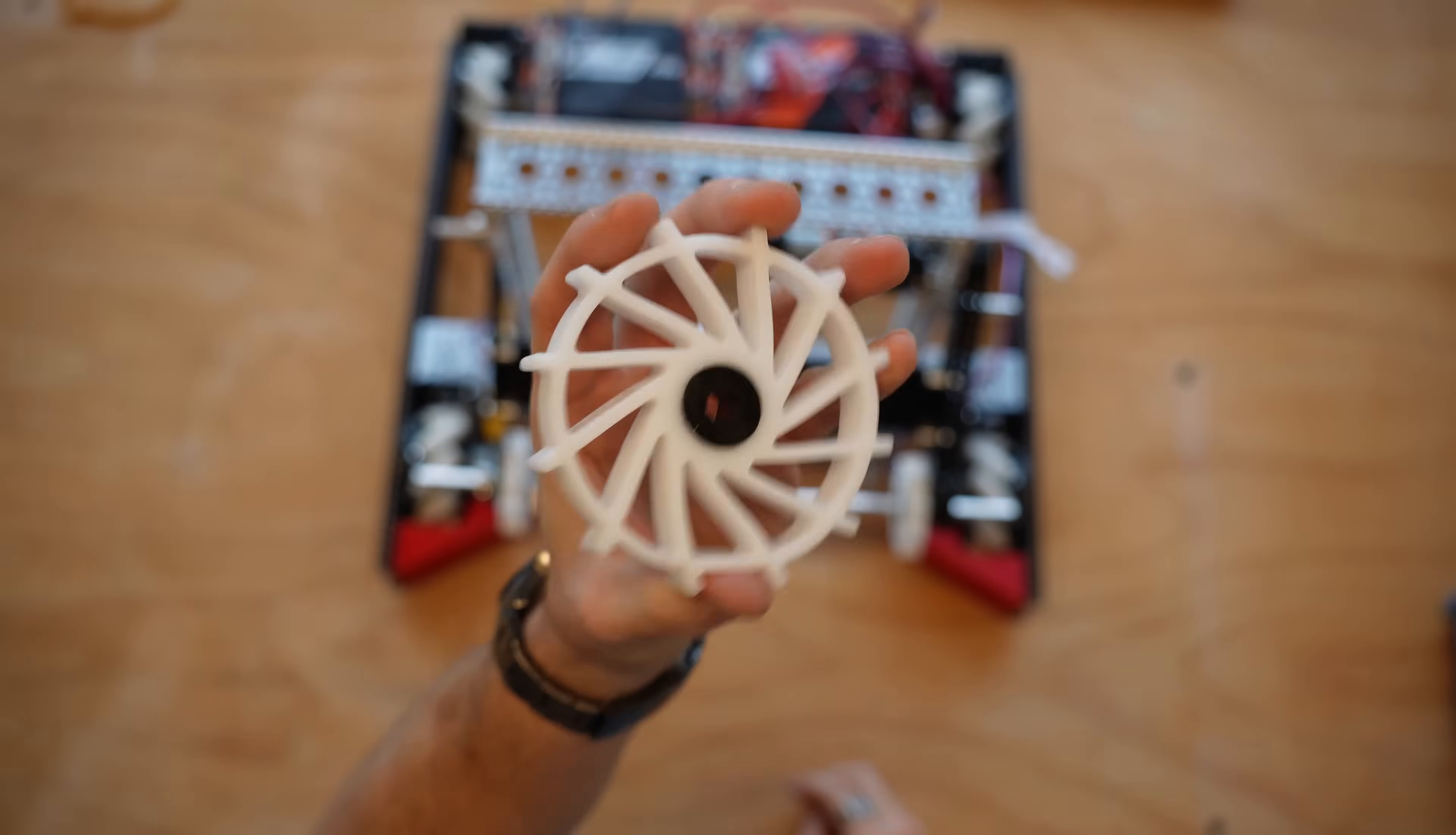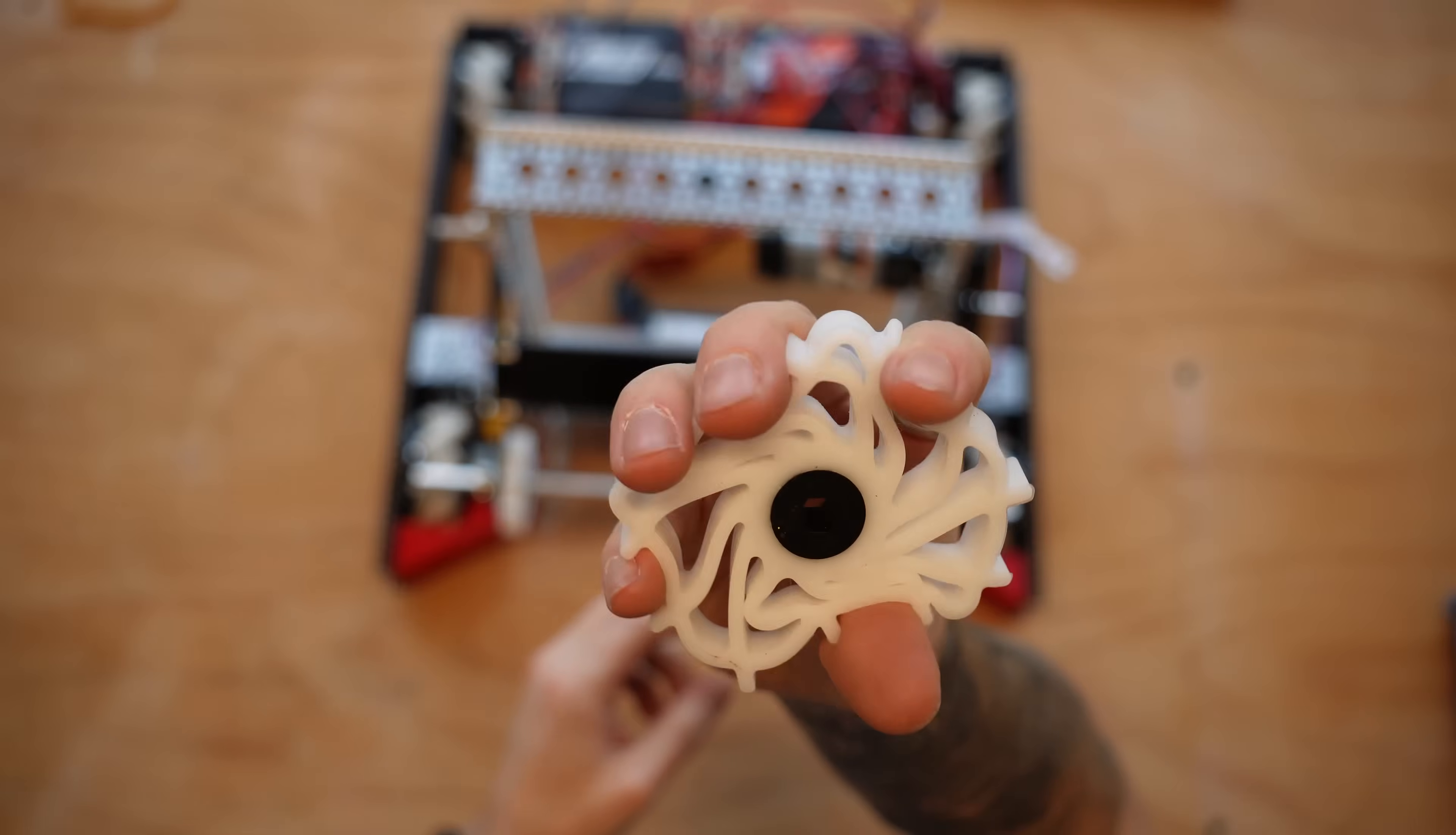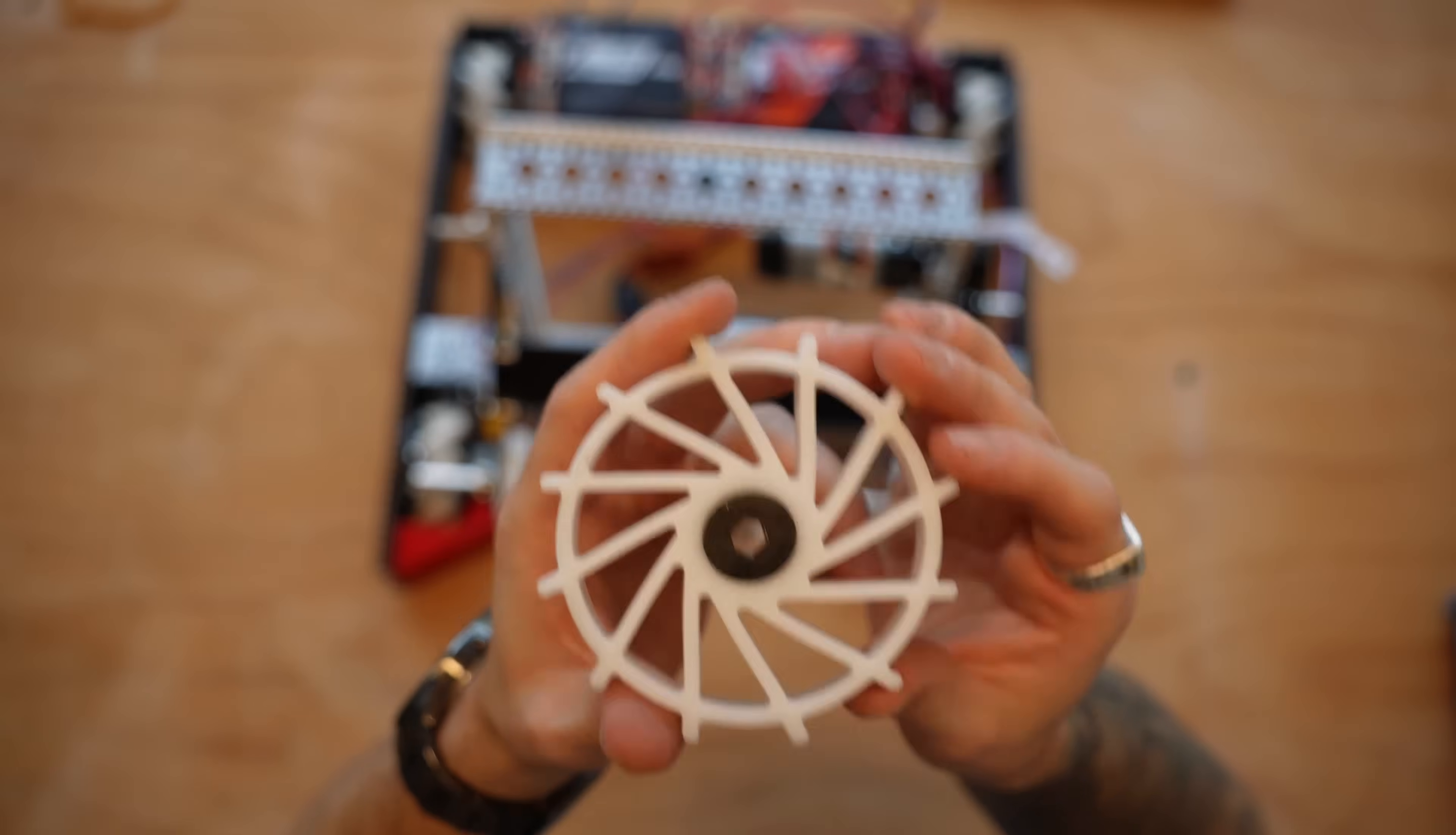Now this is a compliant wheel from Swift Robotics. You can also use compliant wheels from Anymark, Rev Robotics, GoBuilder, any of these really work the same. These Swift ones are quite squishy. It just happens to be what I have on hand. Do I think it's the best one? No, but it's also a good compliant wheel.